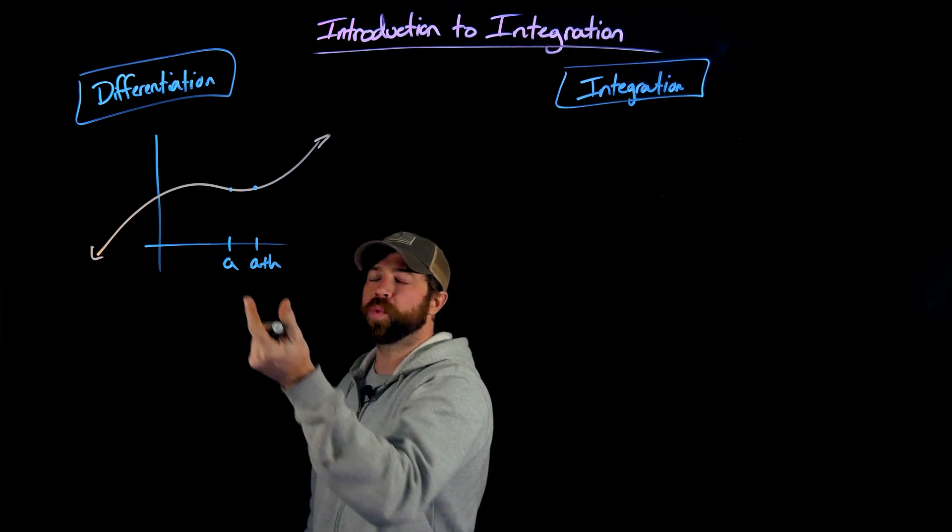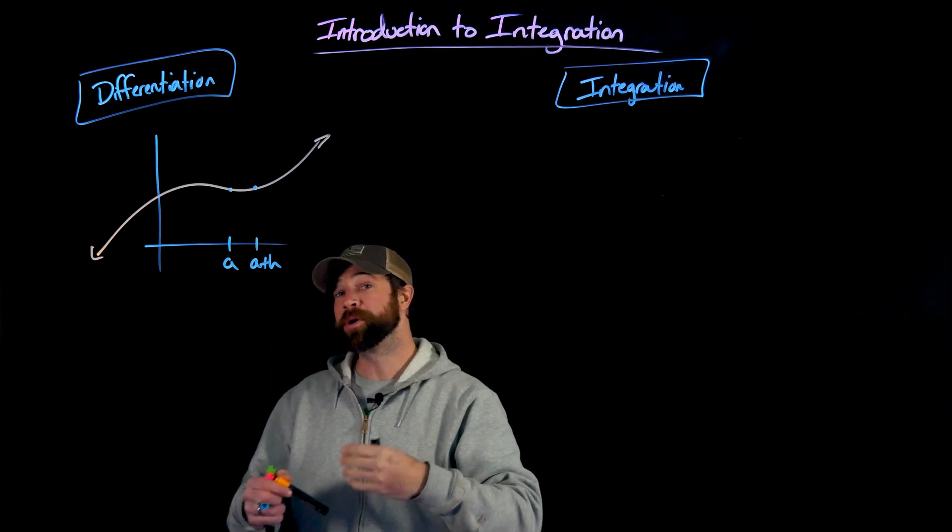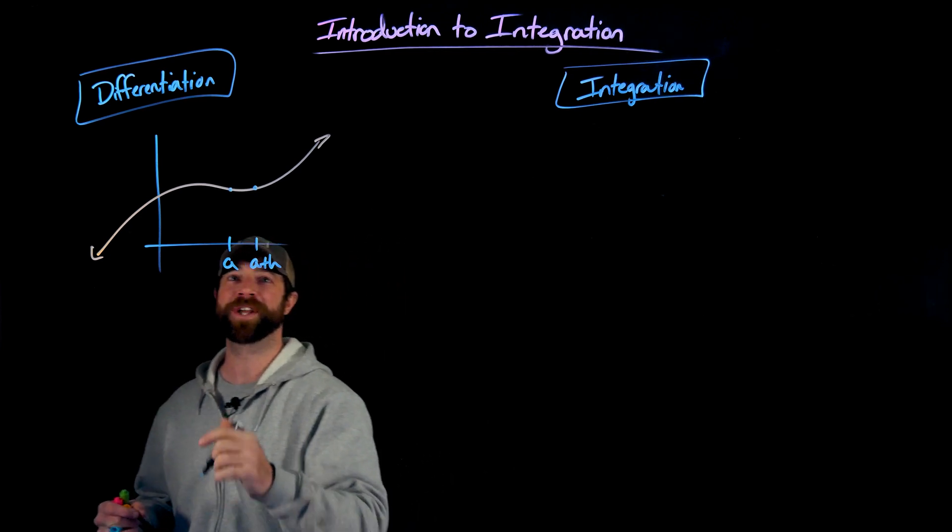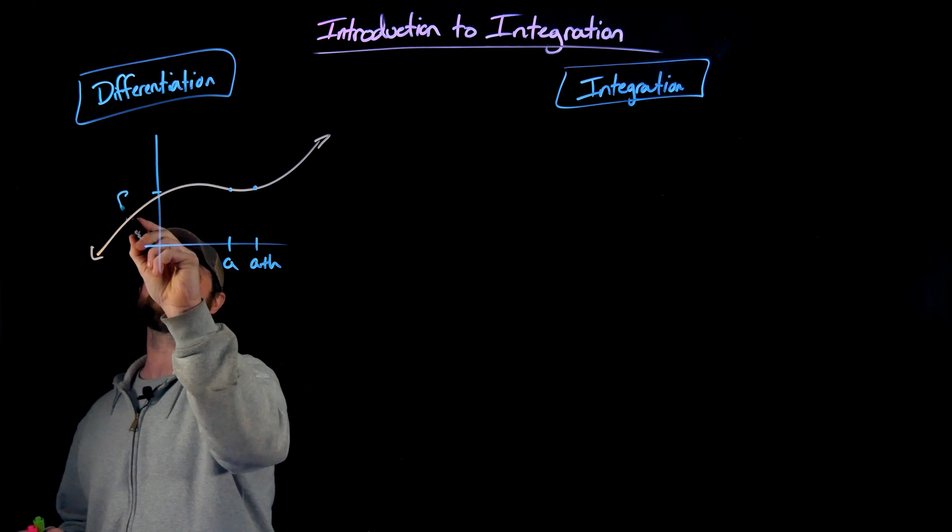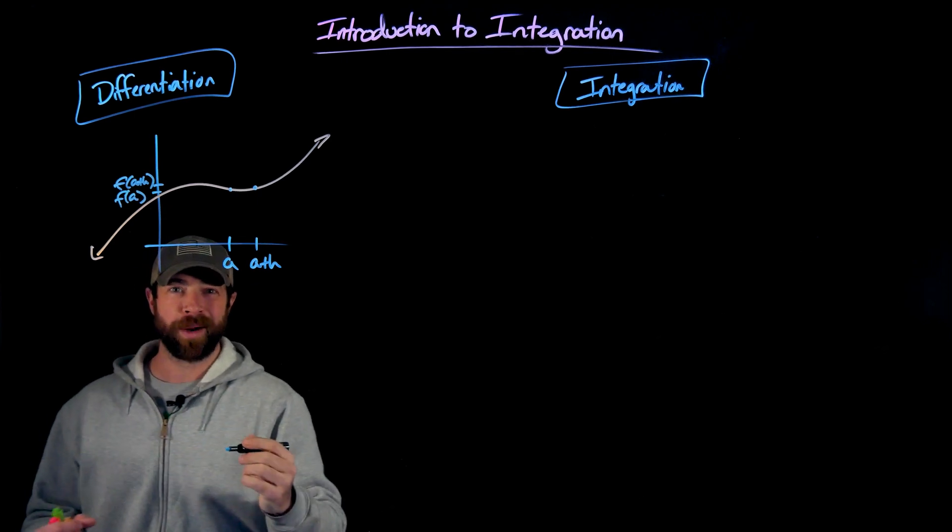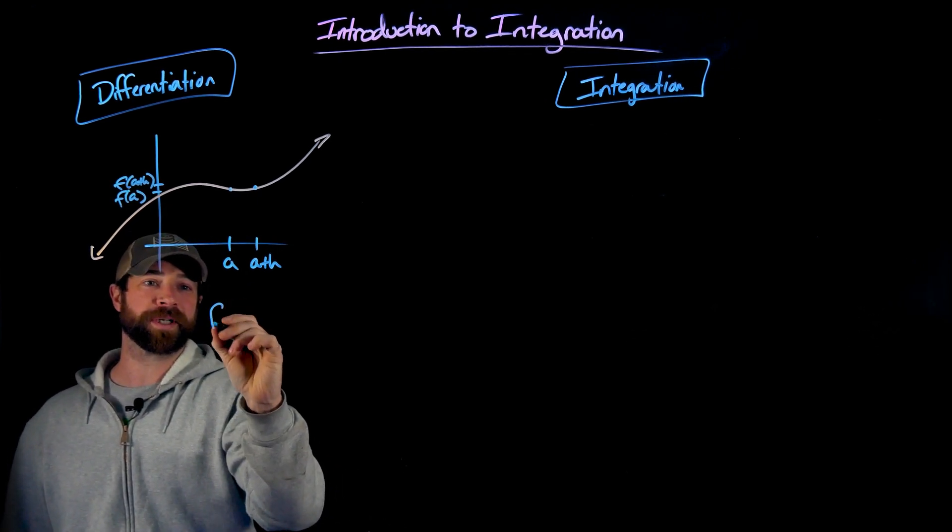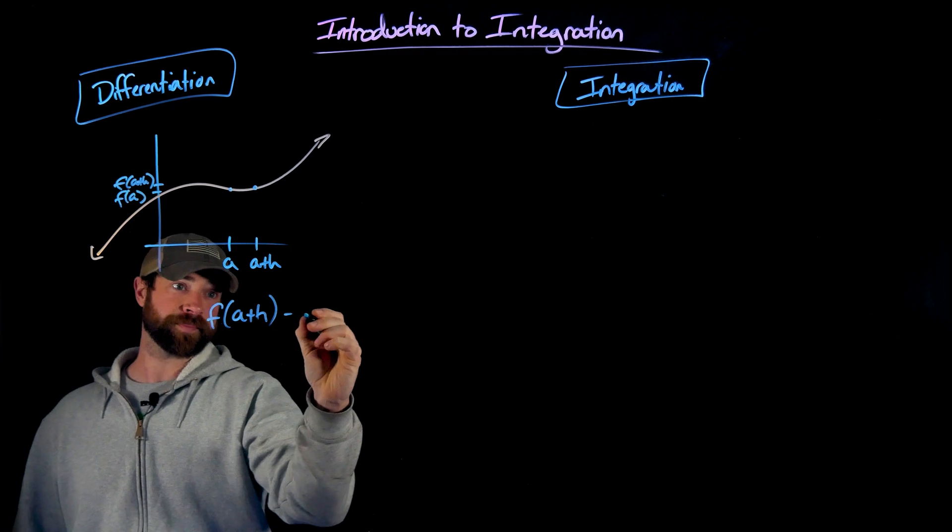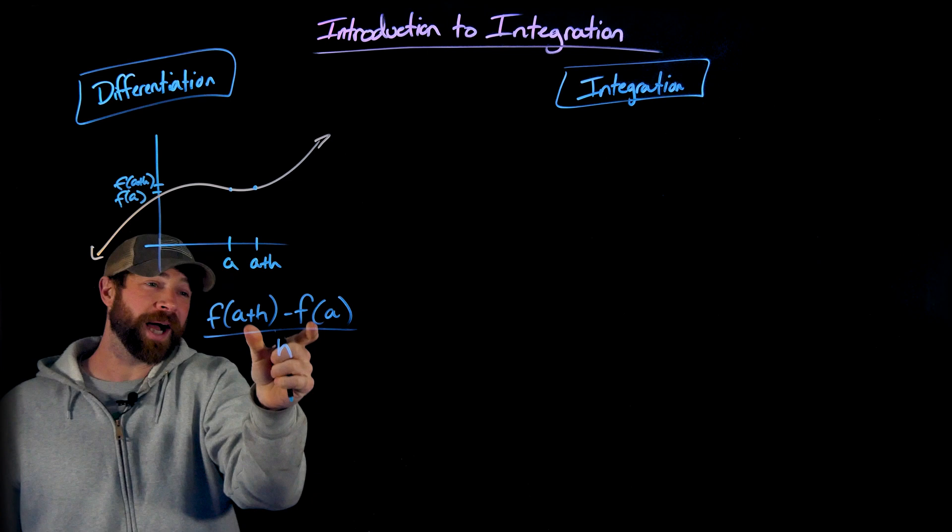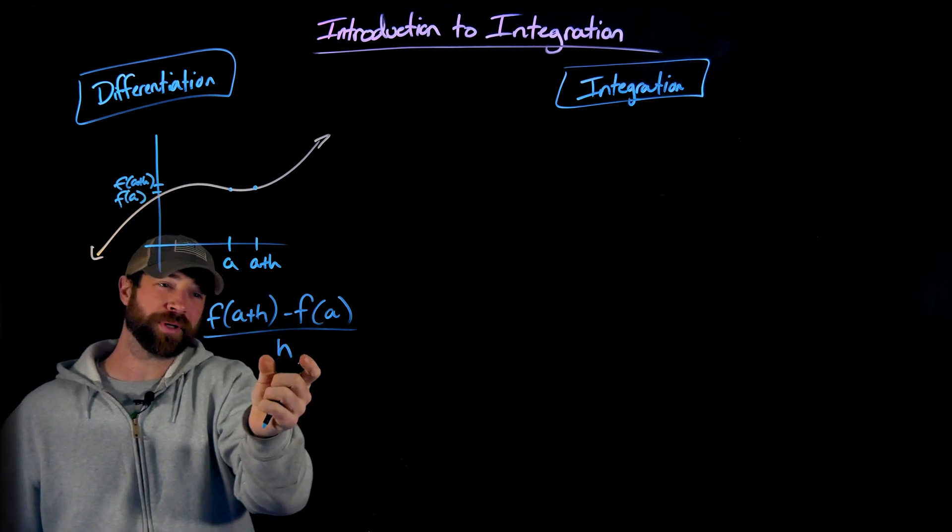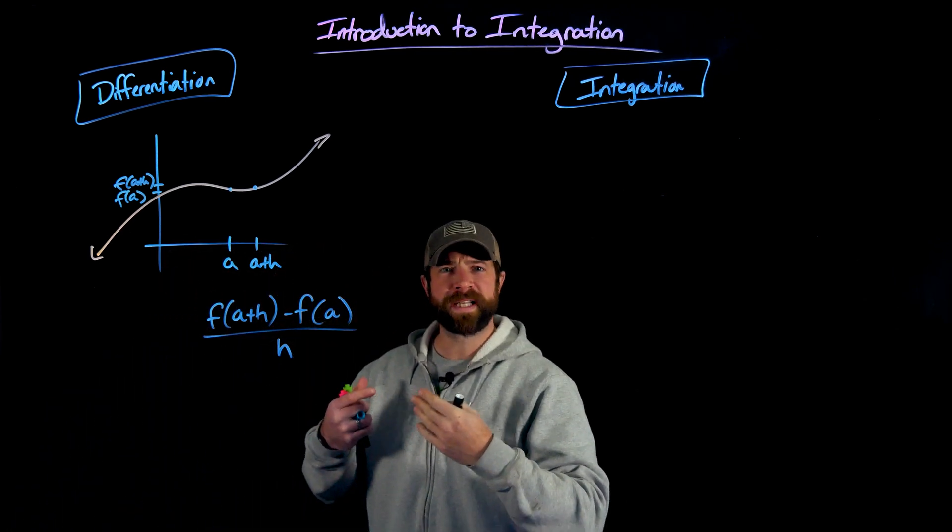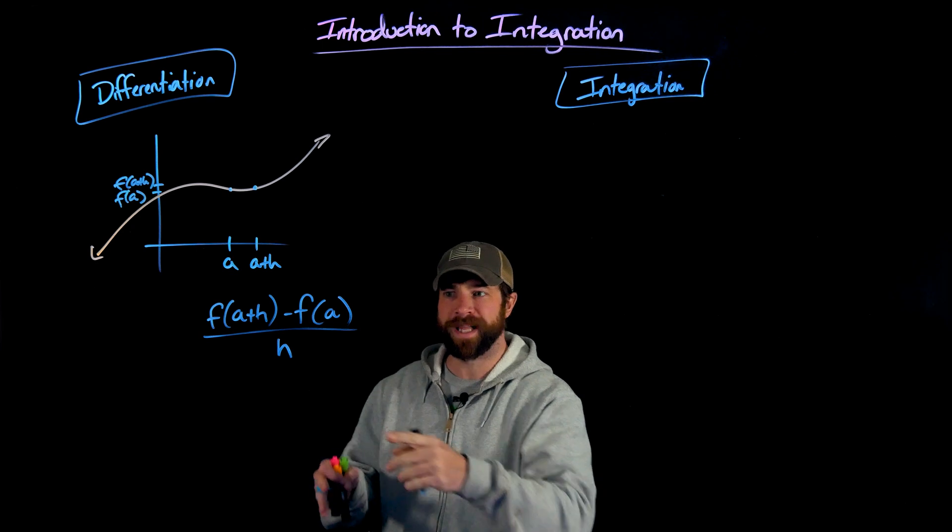But the thing becomes, the closer we make this second point to our first point, the more accurately we can determine the instantaneous slope or instantaneous rate of change. So what we do in this case, we're going to take our two values f of a and f of a plus h and we're going to use the difference quotient to find this rate of change. Again this is the rise over the run, the change in the y values or the outputs over the change of the inputs or the x values. And again this is the average rate of change over this interval of length h.